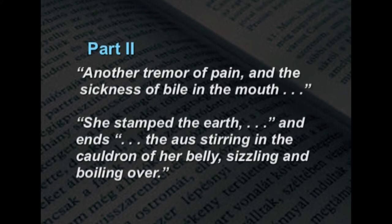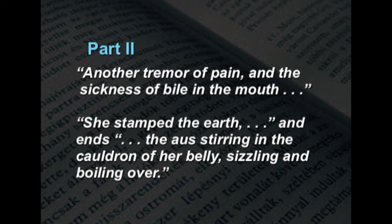Part two begins with: 'Another tremor of pain and the sickness of bile in the mouth,' and the same paragraph ends: 'she stamped the earth... the austere in the cauldron of her belly sizzling and boiling over.' In this part we see Parvati walking along, though with great difficulty. Her father-in-law is nearly out of sight now, having walked farther away. The path is still dark and the labour pain is intensifying. She feels quite weak and even her eyesight seems to blur.